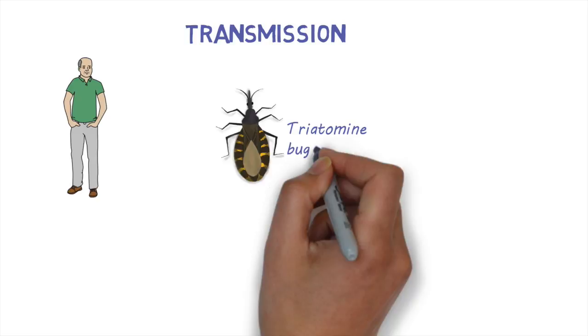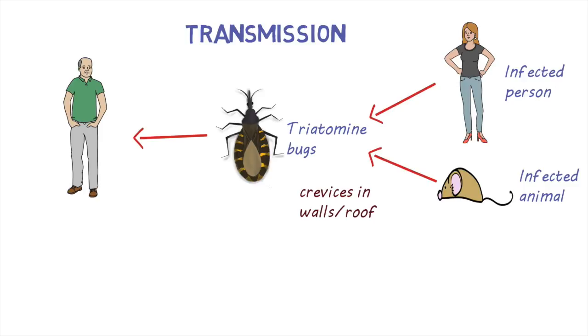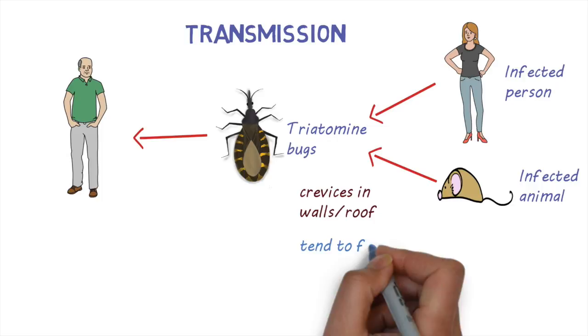These insects get infected after biting an infected animal or person. The bugs tend to live in crevices of walls and roofs of houses, most commonly in houses that are made of materials such as mud, straw, and palm thatch.